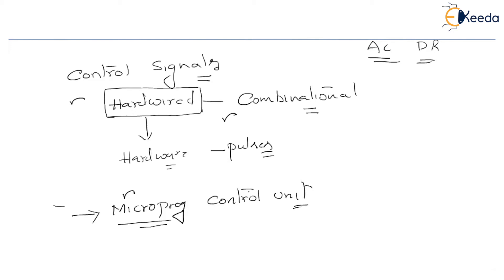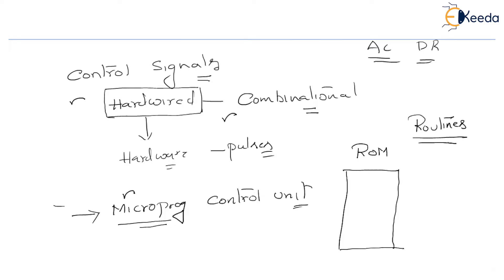Rather, what you can do is program all the control signals. For programming, you do require something called a ROM. You program all that control logic by means of several routines. By using these routines, you will be able to send the control signals in which each and every activity of the system is going to get synchronized. So if you use this logic of programming, then it is called a micro-programmed control unit.